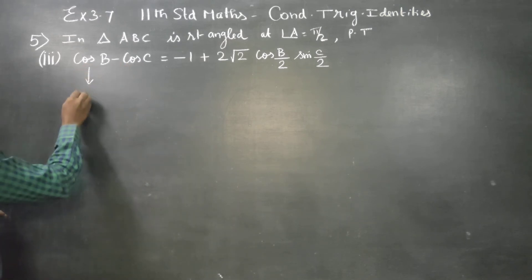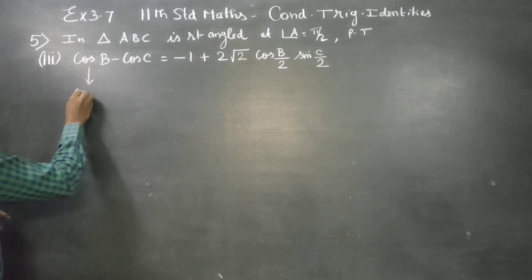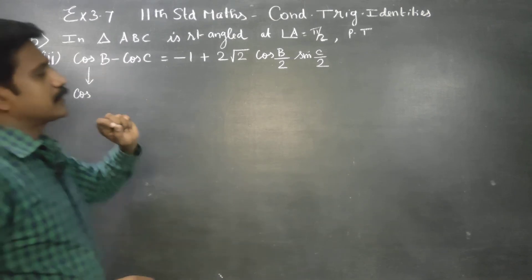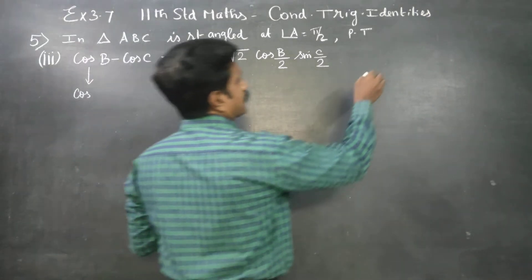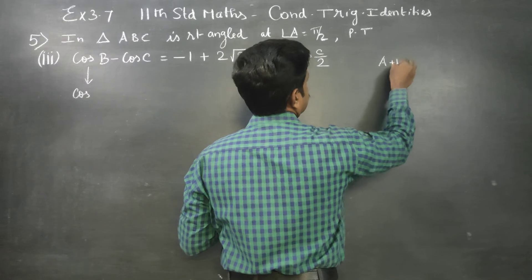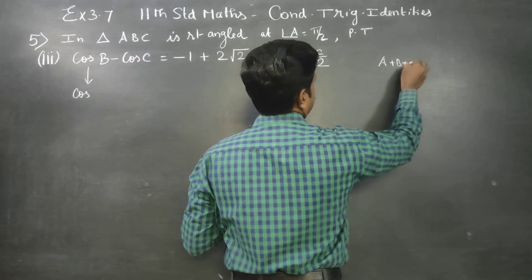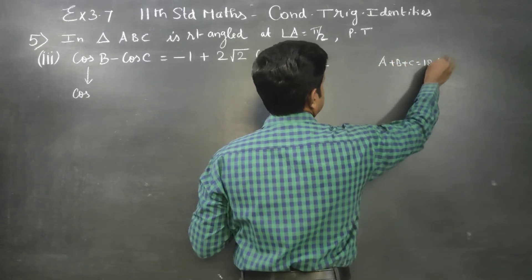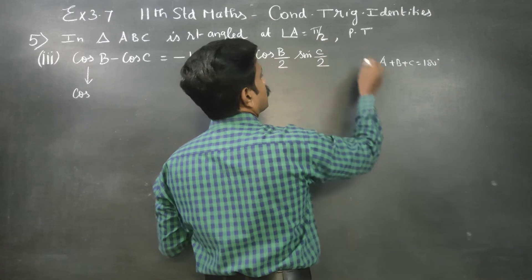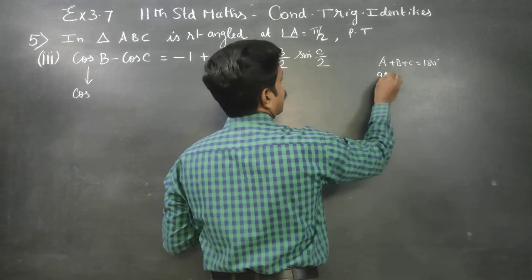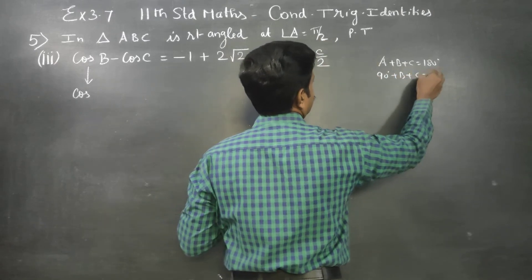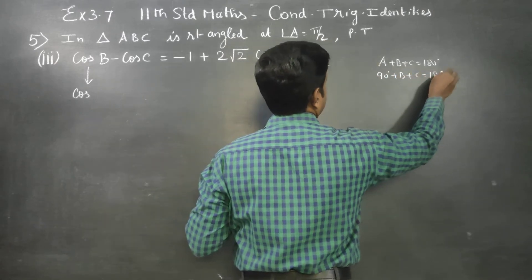I am starting my LHS. Now b is given. Since it is a triangle, a plus b plus c is equal to 180 degrees. But a is 90 degrees, so b plus c is equal to 90 degrees.